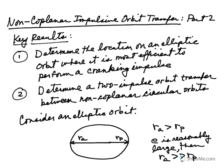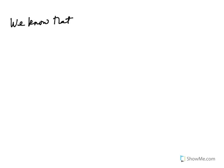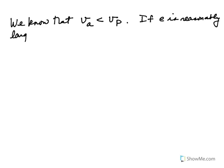If we look at where on the orbit the spacecraft is moving slowest, we know that the speed at apoapsis V_A is less than the speed at periapsis V_P. And if E is reasonably large, then V_A will actually be much, much less than V_P.